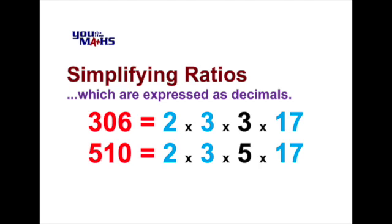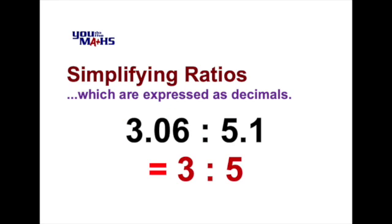So that means if we do a division between the two numbers we can remove those numbers and we're left with a ratio of 3 to 5. So the simplest ratio for 3.06 to 5.1 is the ratio 3 to 5.